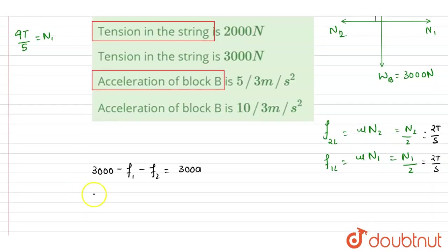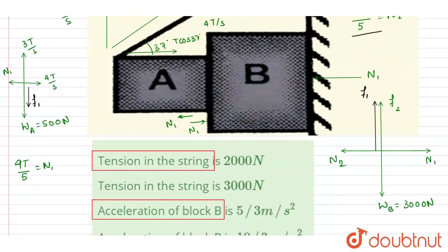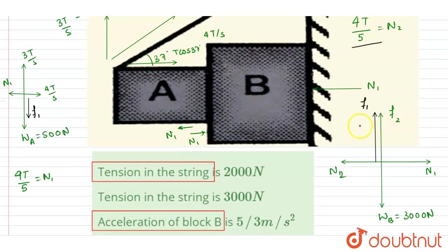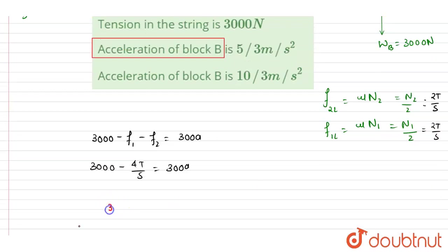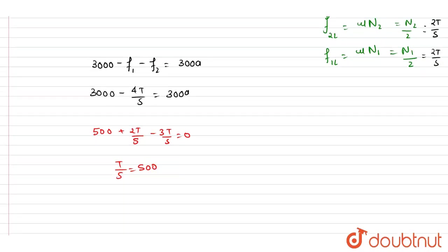Since mass of B is very heavy and block A is constrained by the string and is in contact with B, A will not move in the vertical or horizontal direction. So the net force on A is zero. Writing the equilibrium equation for A: 500 + 2T/5 − 3T/5 = 0, which gives 3T/5 = 500, so T = 2500 N.